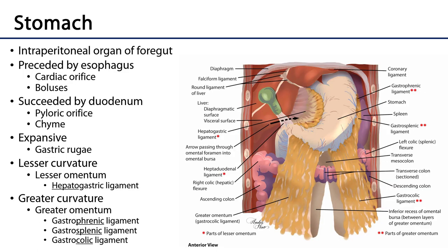The stomach is an organ of the foregut. The foregut begins at the beginning of the abdominal esophagus and it ends at the major duodenal papilla of the second part of the duodenum, and as you can see the stomach is the largest portion of the foregut.